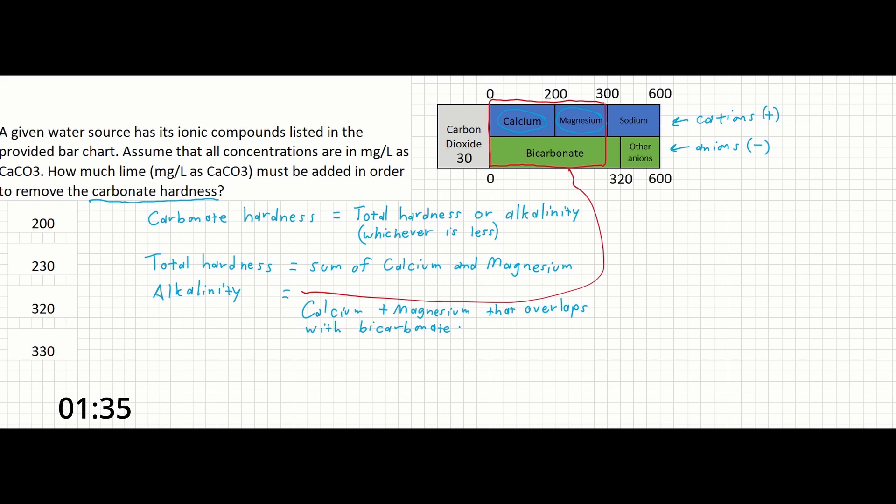If the total hardness was greater than the bicarbonate, then there would be both carbonate hardness and noncarbonate hardness present. The point of the bar chart is to show you how much of the hardness from calcium and magnesium are carbonate hardness versus noncarbonate hardness.